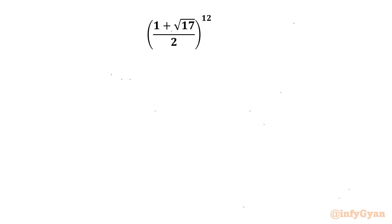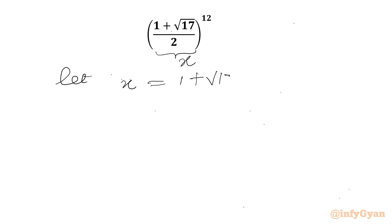Welcome back to Infigyan, my dear friends. In this video we have one very interesting question from Radicals. Here we have to evaluate (1 plus square root 17 over 2) whole power 12. So let us get started by considering this bracket equal to x. Let x equal to (1 plus square root 17) over 2.